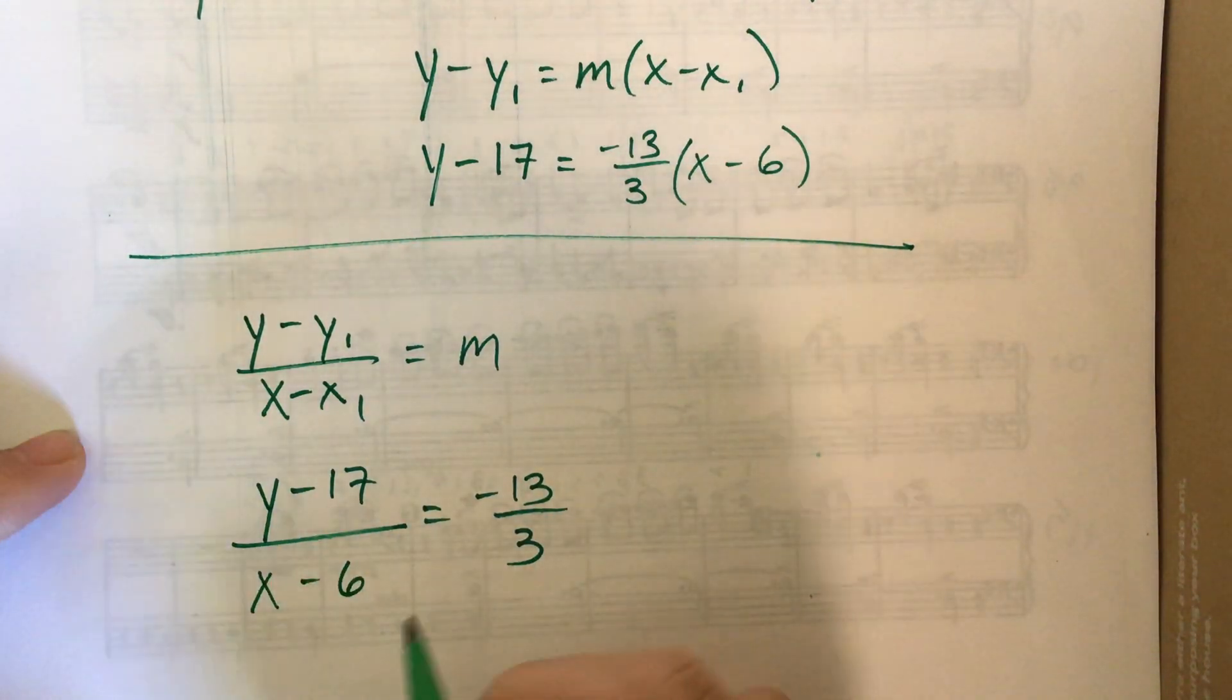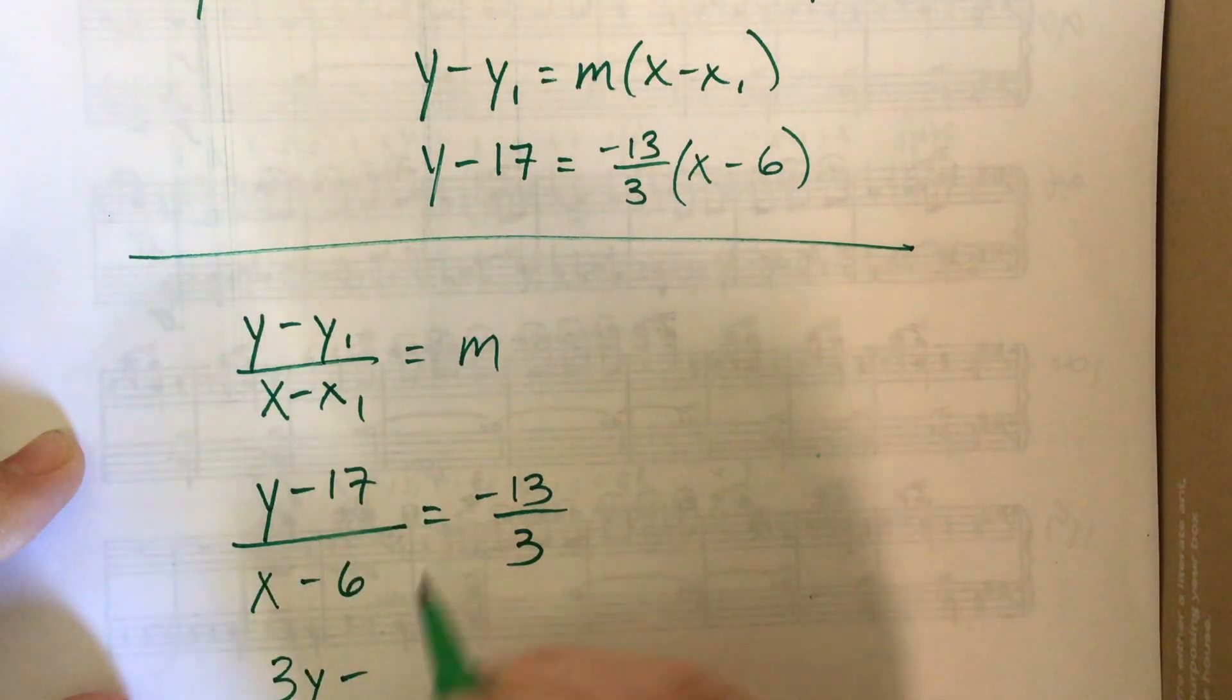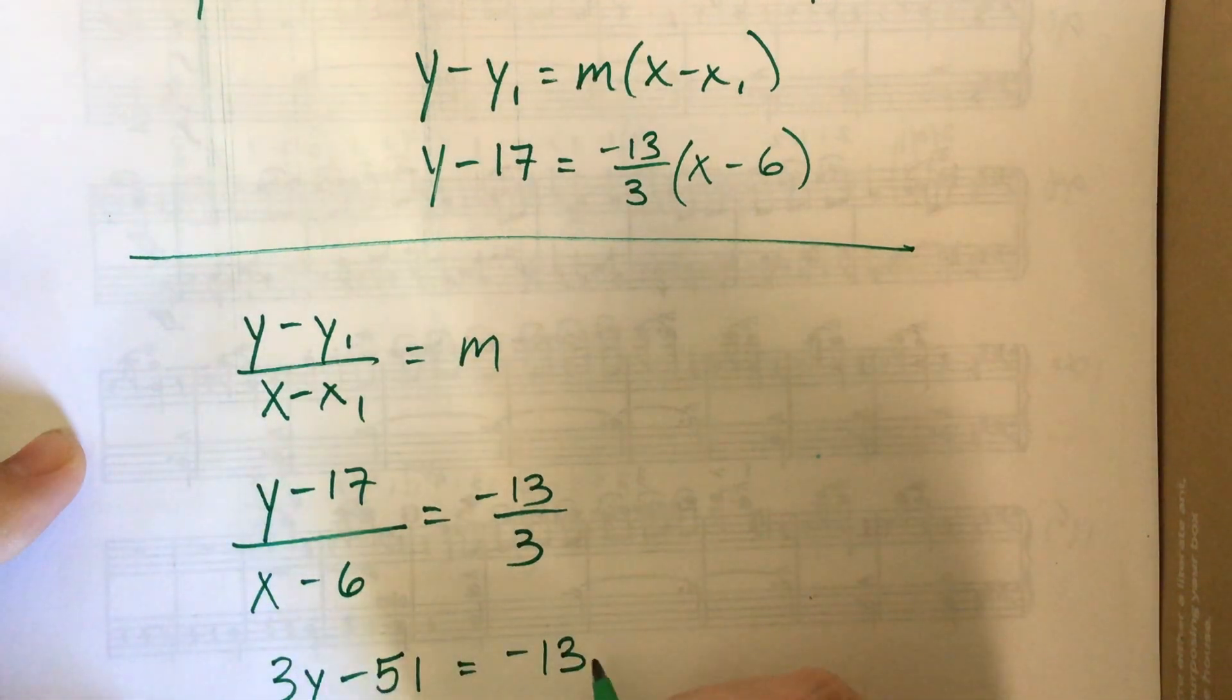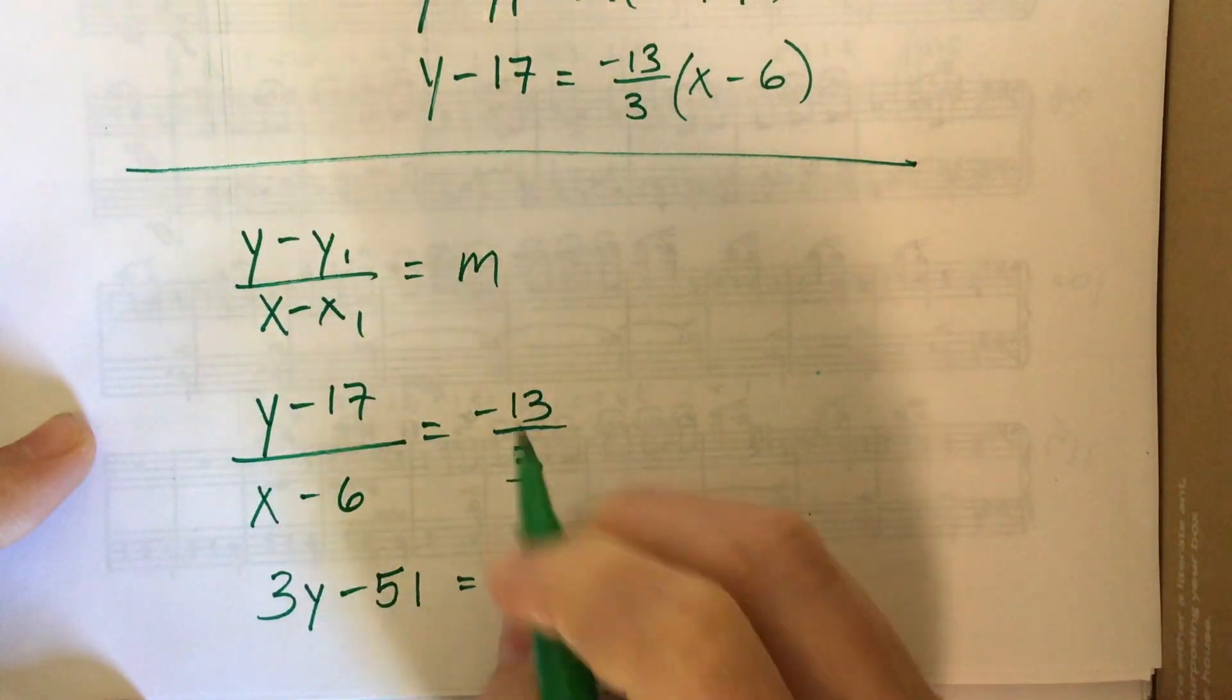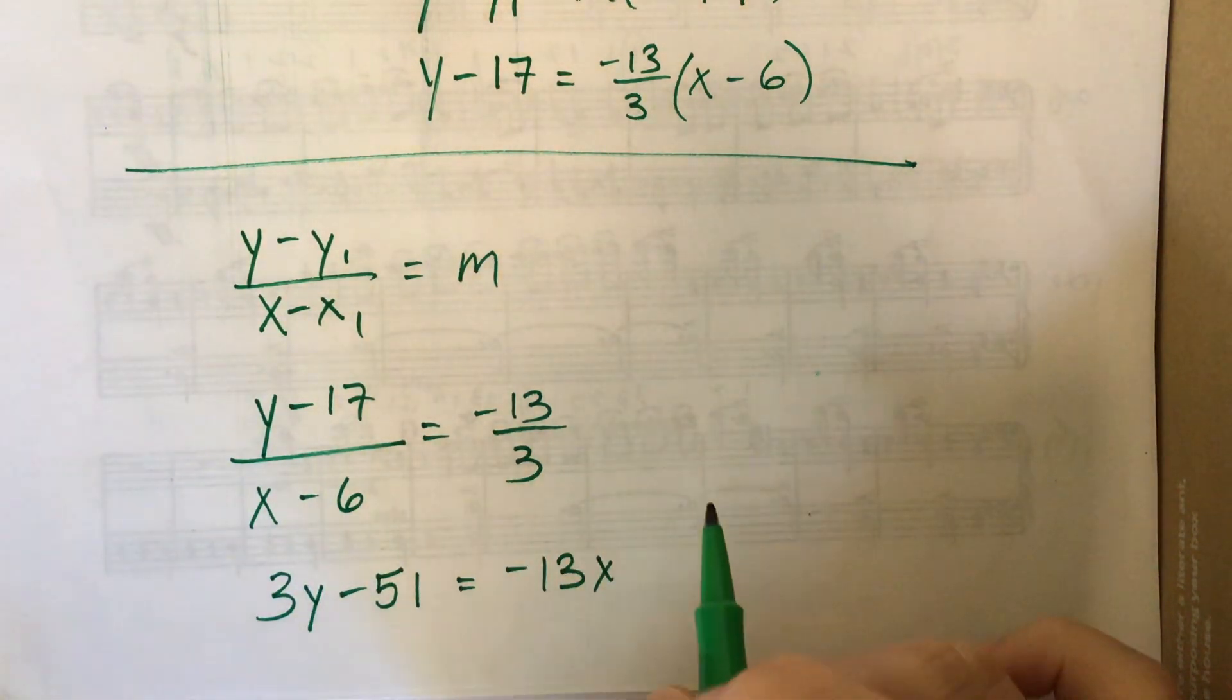And so this puts me in a position, I have this, what, 3y minus, oh, would you have 30, 21, 51 is equal to negative 13x, what is that, 6 times 13, 6 times 10 is 60, 6 times 3 is 18, so 78.